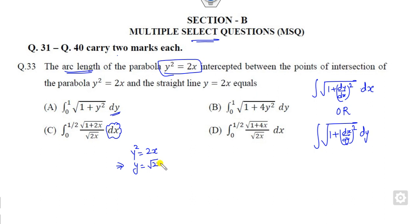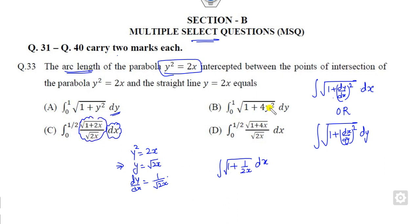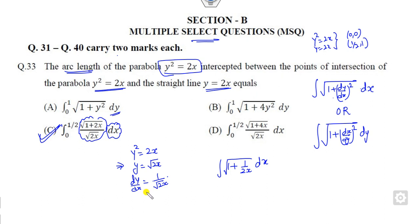The value of y can be written from the given equation, and dy/dx is nothing but 1/(2√x). If you substitute this value into the arc length formula, the answer becomes the integral of √(1 + 1/(2x)) dx, or equivalently √(1 + 2x). To find the limits, note that y² = 2x, so the points of intersection are (0, 0) and (1/2, 1). This gives the first correct answer.